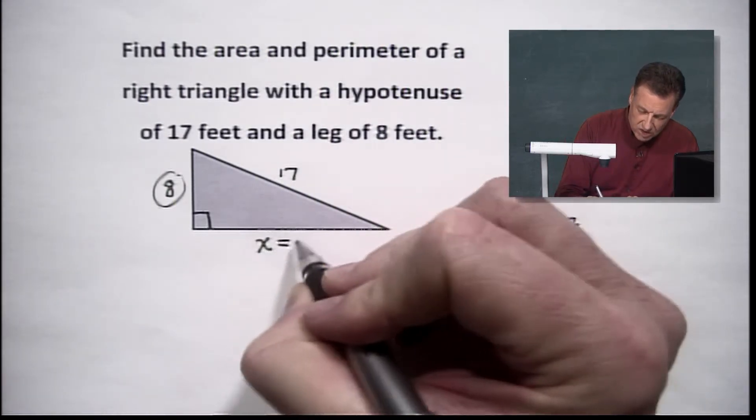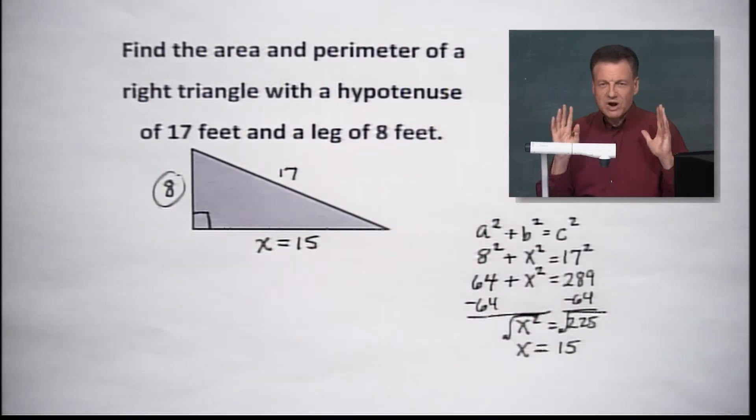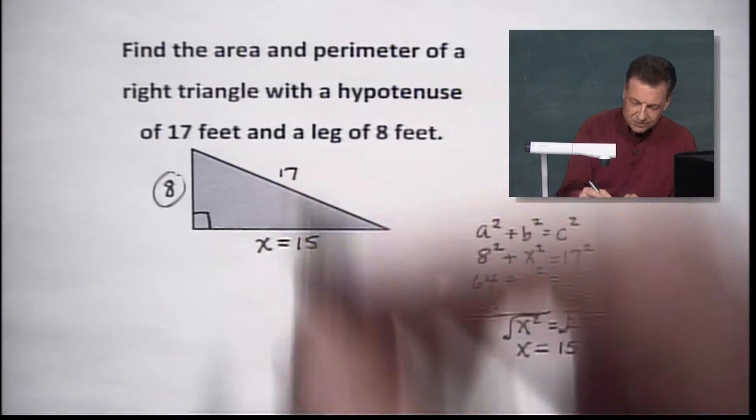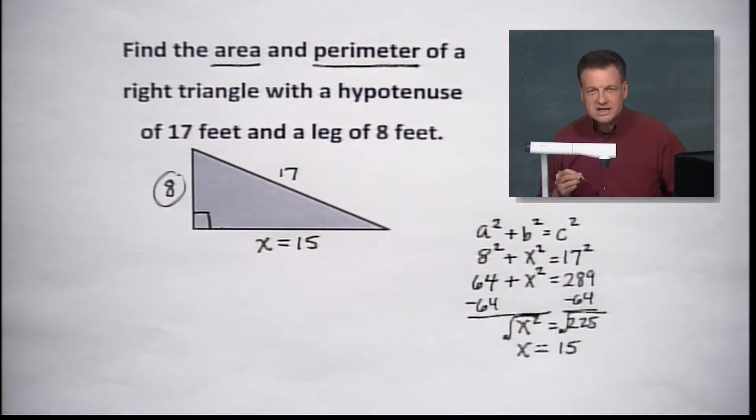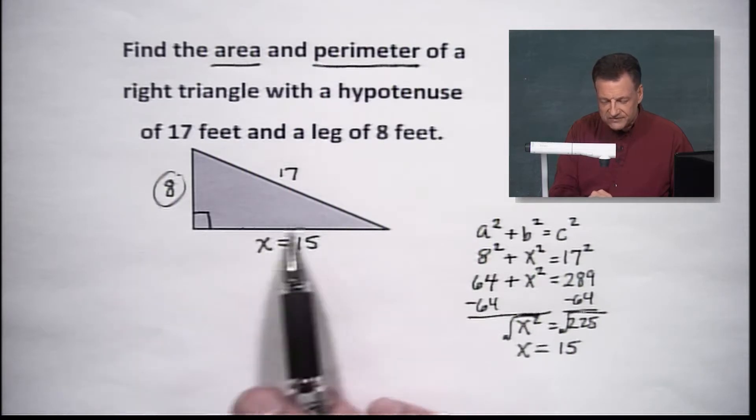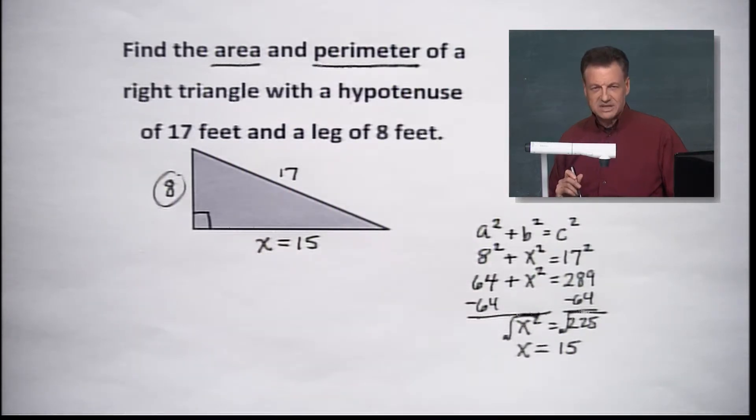So are we done? No, we're not done. We've got 15. We're halfway there. We've got area and perimeter that we're looking for. So once you've found all three sides here, by the way, the triple would be 8, 15, 17. That would be the combination if you knew that. Good for you.